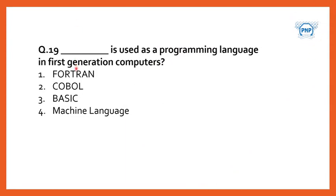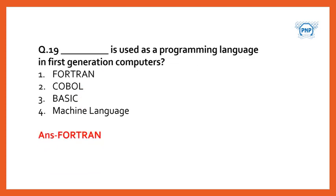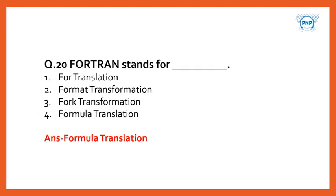Question nineteen — this is in your book. Dash is used as a programming language in first generation computers. Options are Fortran, COBOL, Basic, or machine language. The answer is machine language. Fortran stands for formula translation.